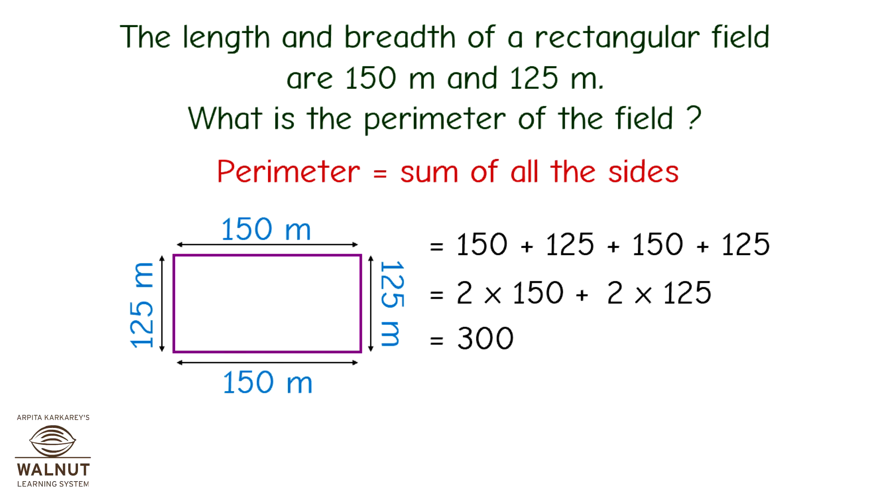That is equal to 300 plus 250. That is equal to 550 meters. So, the perimeter of the field is 550 meters.